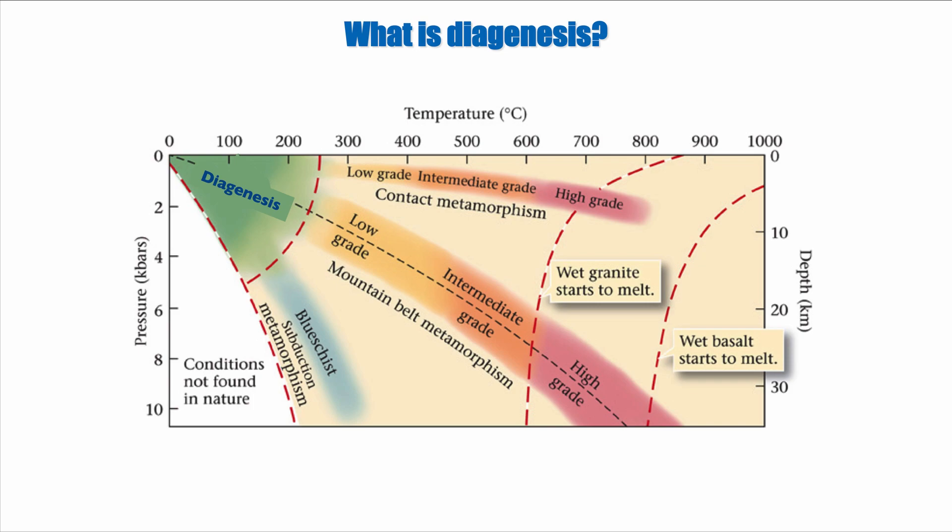Diagenesis is really the beginning of the history of burial and the limit in terms of temperature traditionally is from 0 to 250 degrees and in terms of pressure on the vertical axis it's less than 4.5 kilobars. After diagenesis we enter the realm of metamorphism which goes all the way to a thousand degrees and is divided in two different grades, but that's not the goal of our class today.